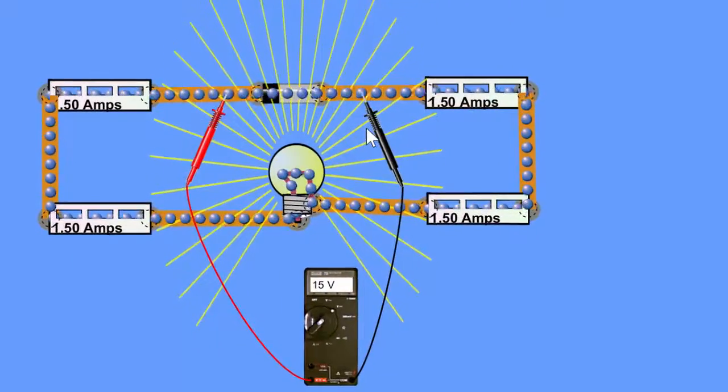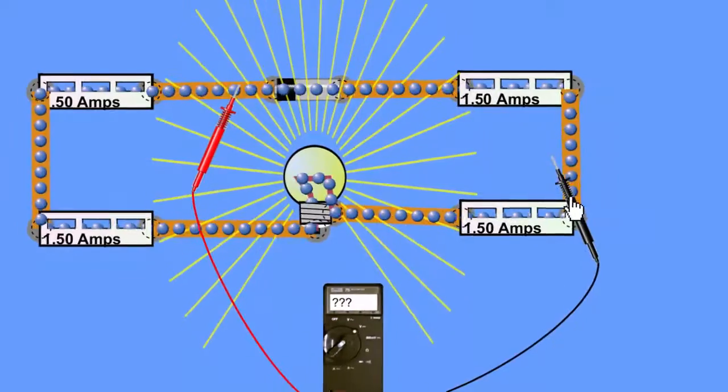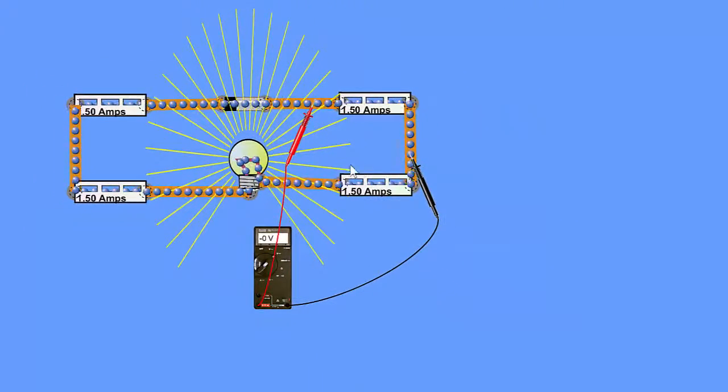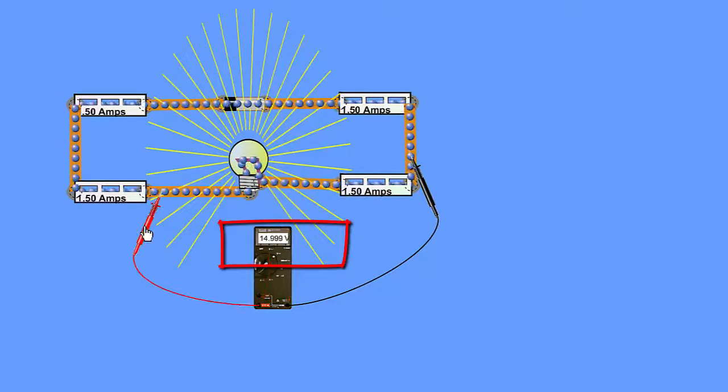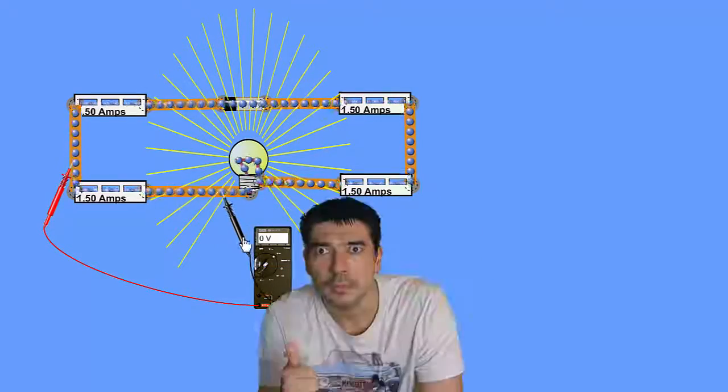So this cell is providing 15 joules per coulomb and because the wires have very low resistance you can see that no energy is being lost. Hence the voltmeter reading of zero here, here, but not here because now we're measuring across the bulb. So 15 joules gets dropped on the bulb.